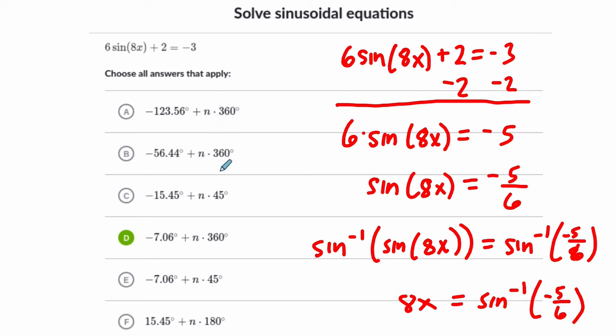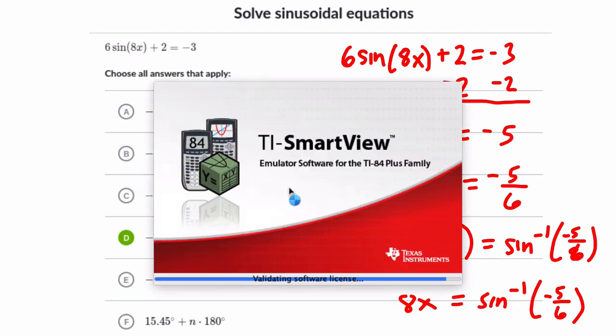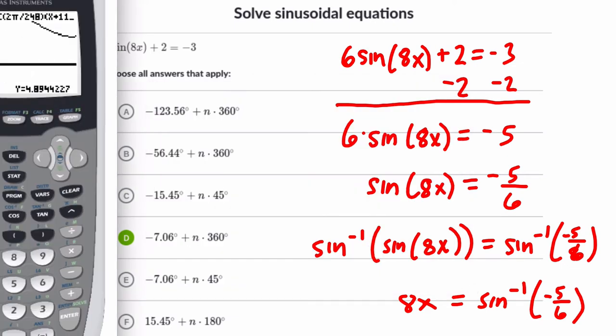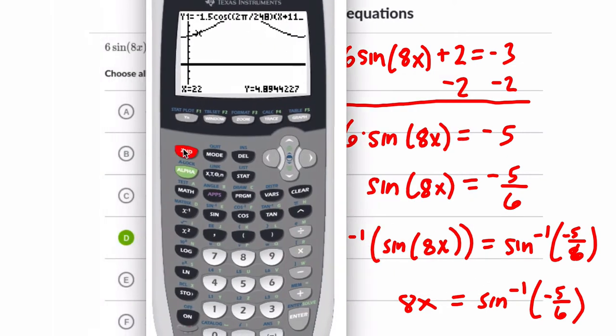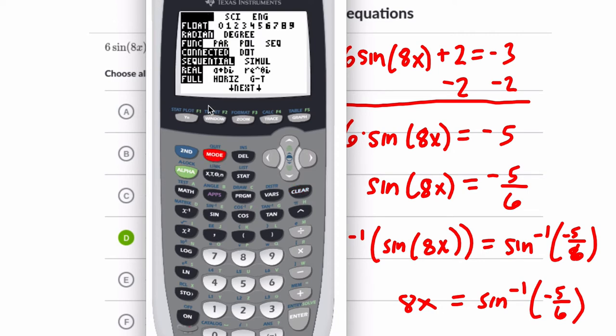So 8x equals the inverse sine of negative 5 sixths. And it looks like this problem is in degrees. I see the 360s here. So I want to pull up my calculator. It might take a second to load. I'm using the calculator because I want to find the inverse sine of negative 5 sixths. Make sure under mode, because we're dealing with degrees, scroll down. Here's degree. Select that. Quit out.